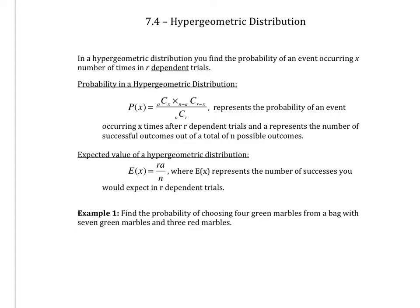Okay, so let's get right into it. In a hypergeometric distribution, you find the probability of an event occurring X number of times in R-dependent trials.